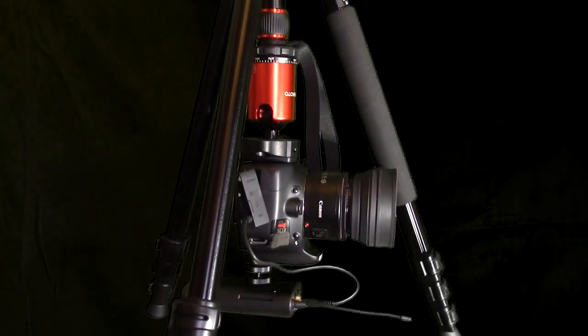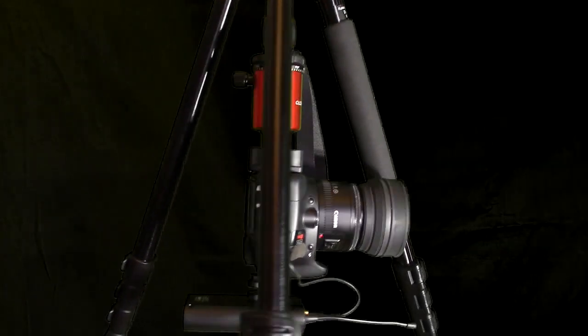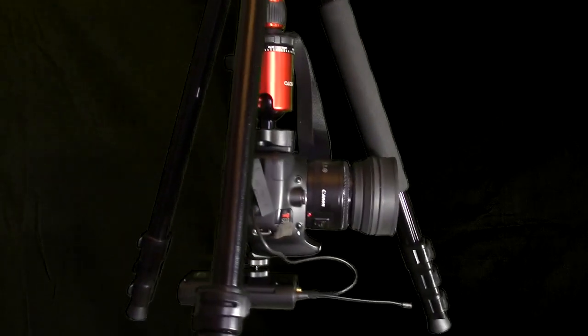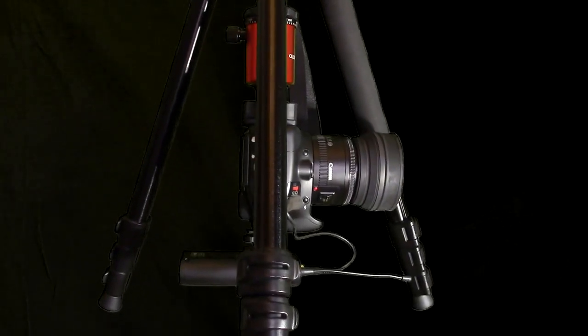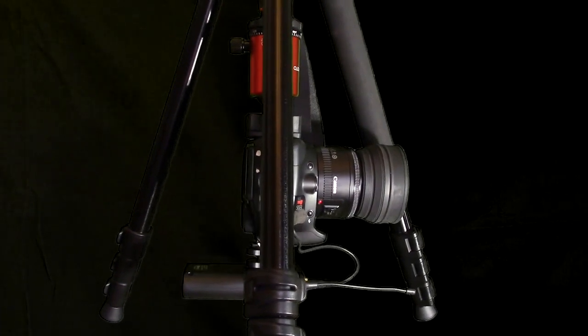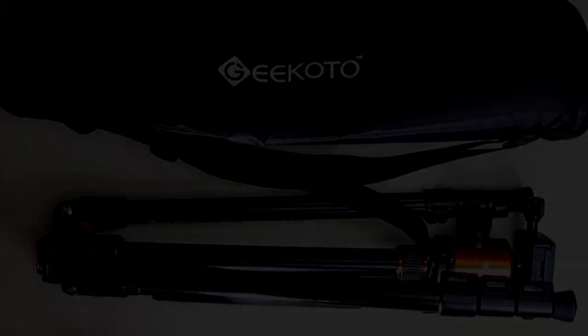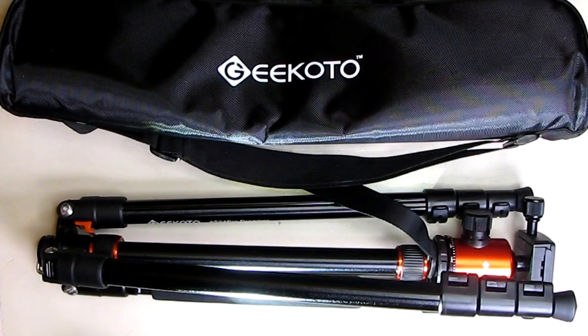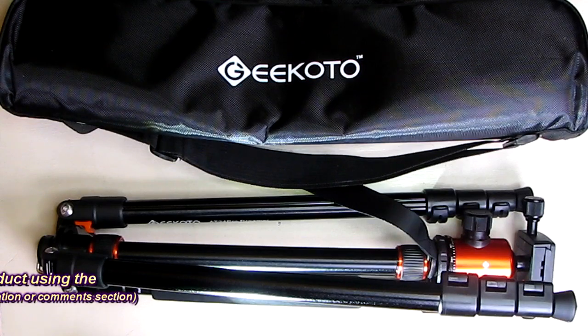Here you can see an example of how I have the tripod center section turned upside down. Now I have the camera really low for some really cool low-angle shots. So what's more of my opinion about the Geekoto 77-inch tripod?